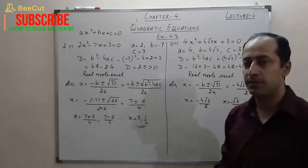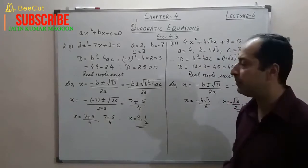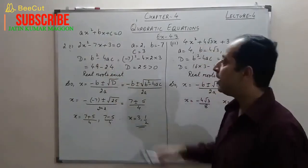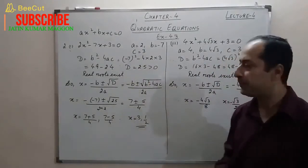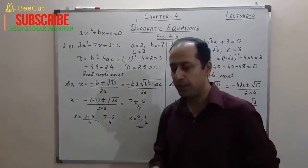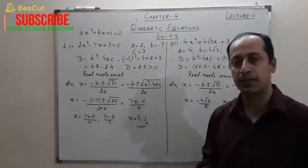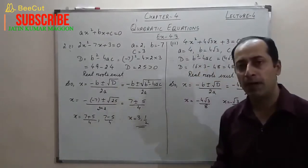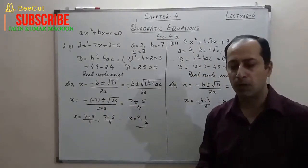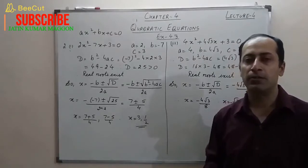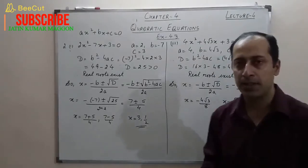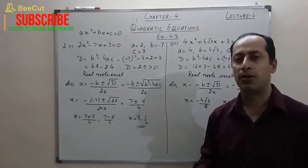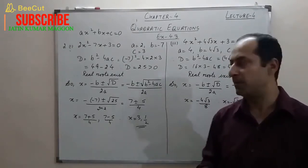The equation is 2x² − 7x + 3 = 0. The first step is to compare this equation with the general form and write the values of a, b, and c. We also discussed the discriminant, which is b² − 4ac. We find the discriminant to know what kind of roots we will get — if real roots exist, we simplify; otherwise we don't.